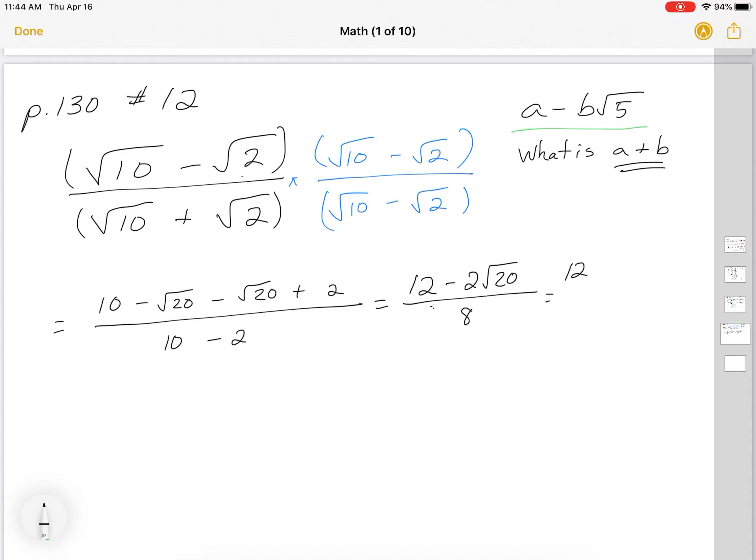So let's simplify this further. 20 is 4 times 5. And I do that because 4 is a perfect square, so I know I can take something out of there. So I have 8 on the bottom. So I'm going to have 12 minus square root of 4 is 2. So 2 times 2 is 4 root 5 over 8.